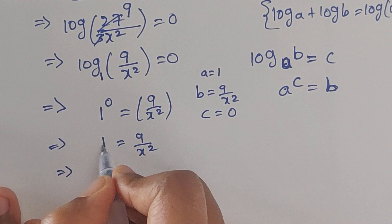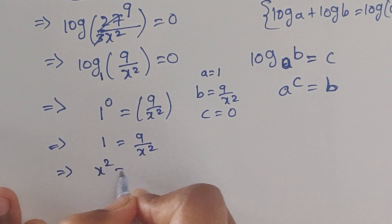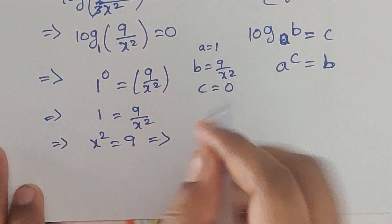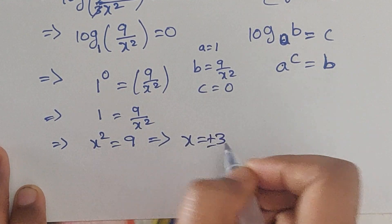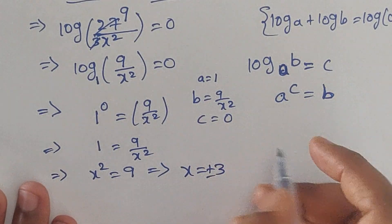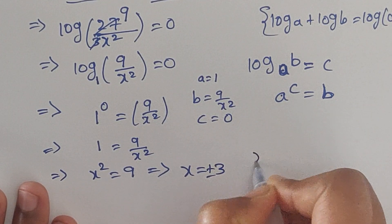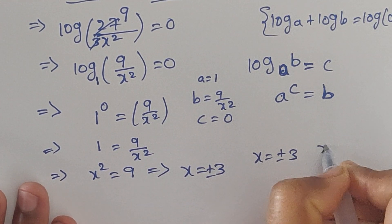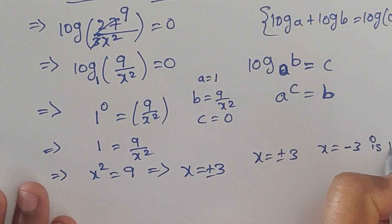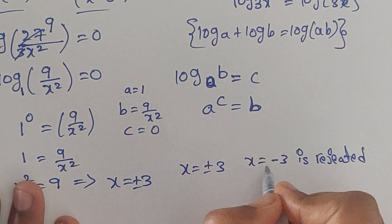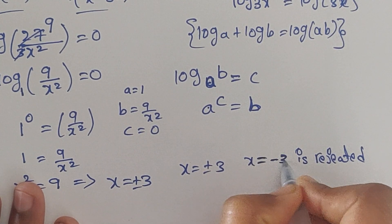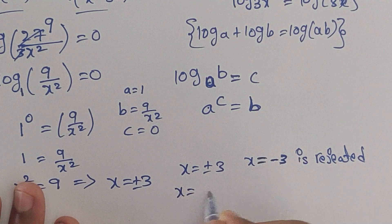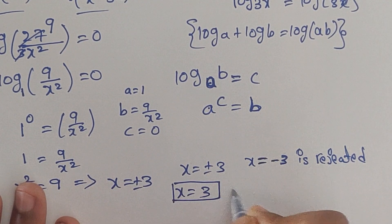So 1 equals 9 over x², which means x² equals 9, so x equals plus or minus 3. We got x equals plus or minus 3. However, x equals minus 3 is rejected because it would give a negative value inside the logarithm. Therefore, x equals 3 is the answer.